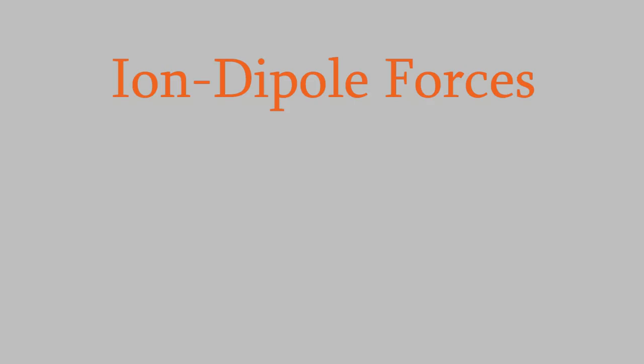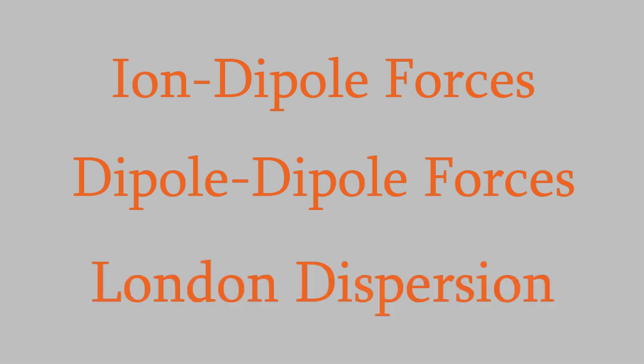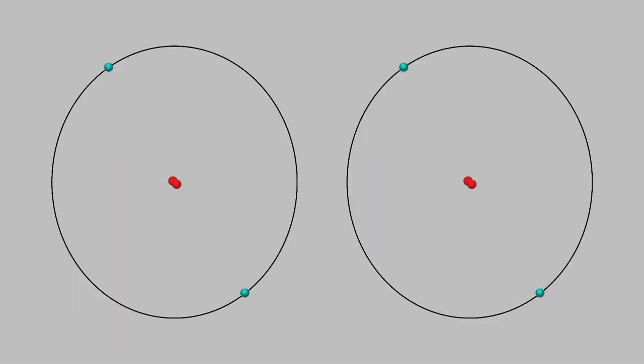I mentioned that ion-dipole forces are stronger than dipole-dipole forces. But both of these are stronger than the last kind of intermolecular force, which is called London dispersion. To understand London dispersion, imagine two helium atoms. Both of them have two protons and two electrons, so they're neutral overall. It seems like they shouldn't attract each other at all, and it's true that the attraction between them is very minute — but it isn't zero.